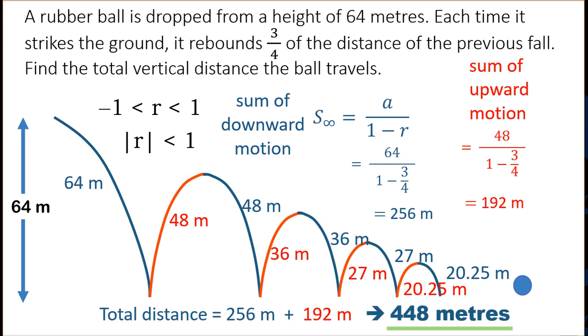And I add those two numbers together to get the total distance and that's 448 metres. That number represents the total vertical distance covered by the ball and that's the answer to this question. Thank you for watching this presentation.